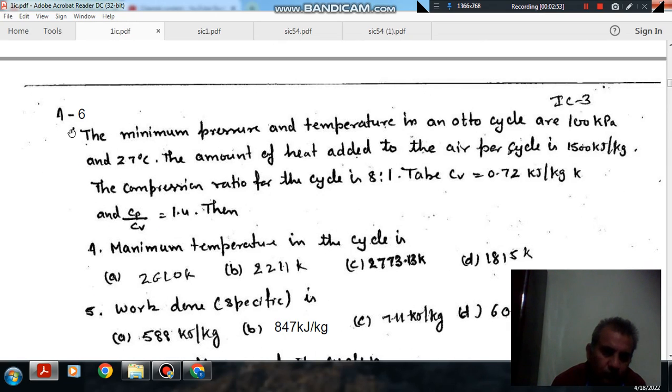Next, question 4 to 6. The minimum pressure and temperature in Otto cycle are 100 kPa at 27 degrees Celsius. The amount of heat added to the air per cycle is 1500 kJ per kg. The compression ratio for the cycle is 8:1. Take Cv is equal to 0.72 kJ per kg K and gamma is equal to 1.4.